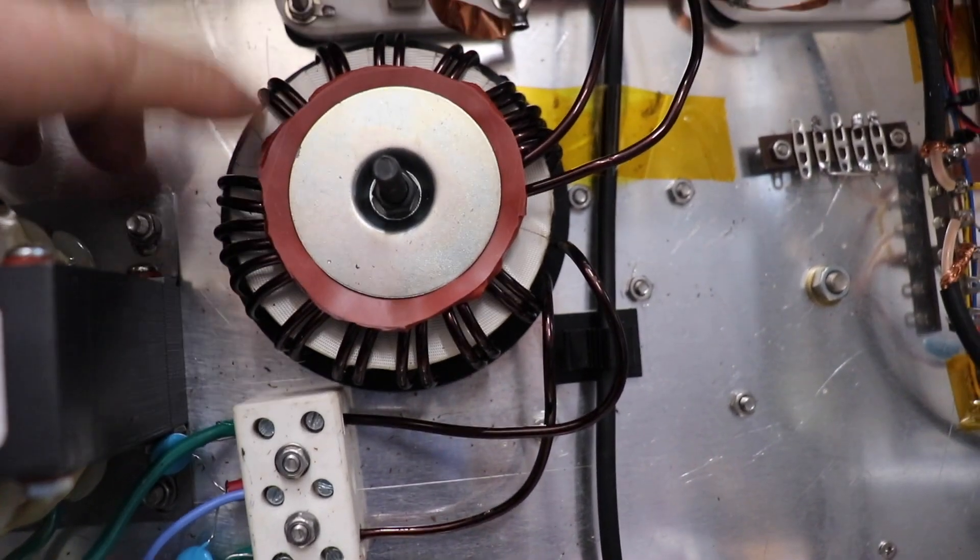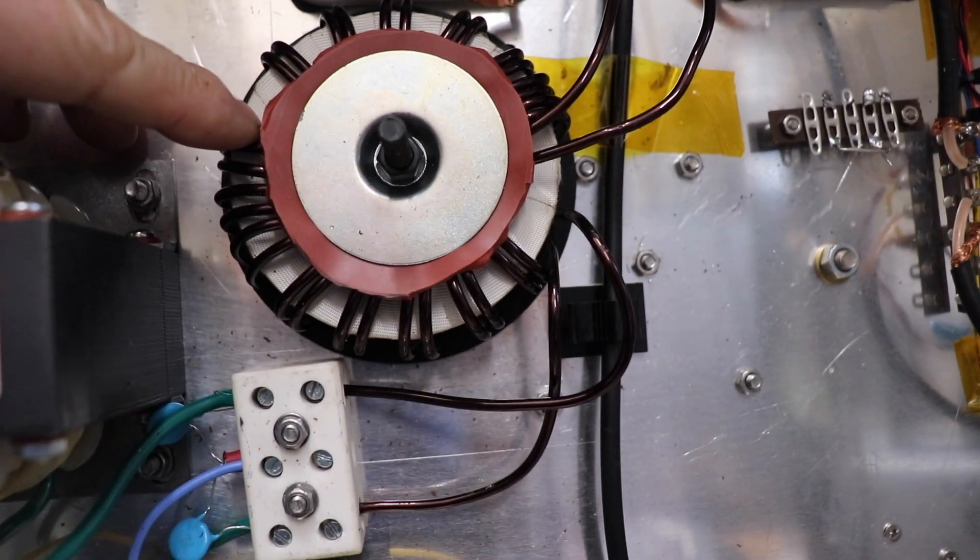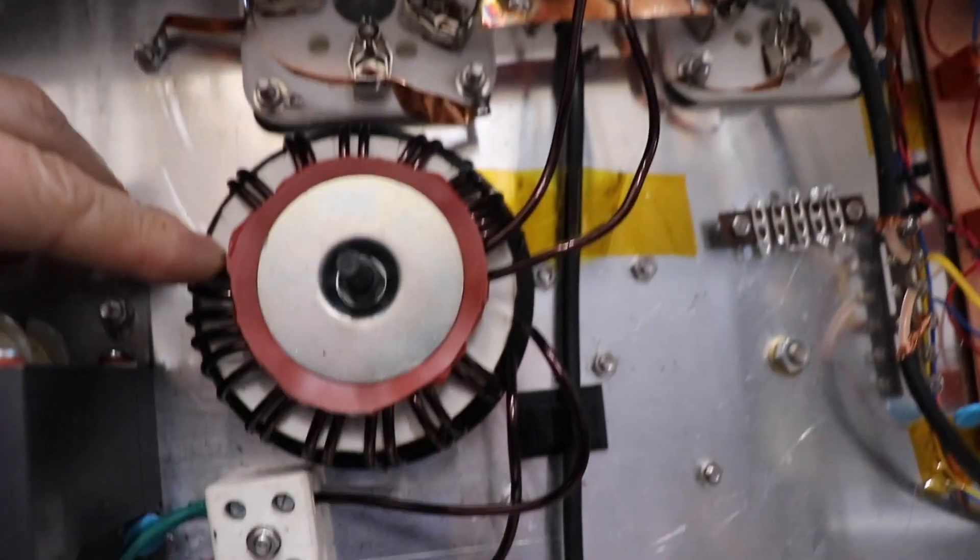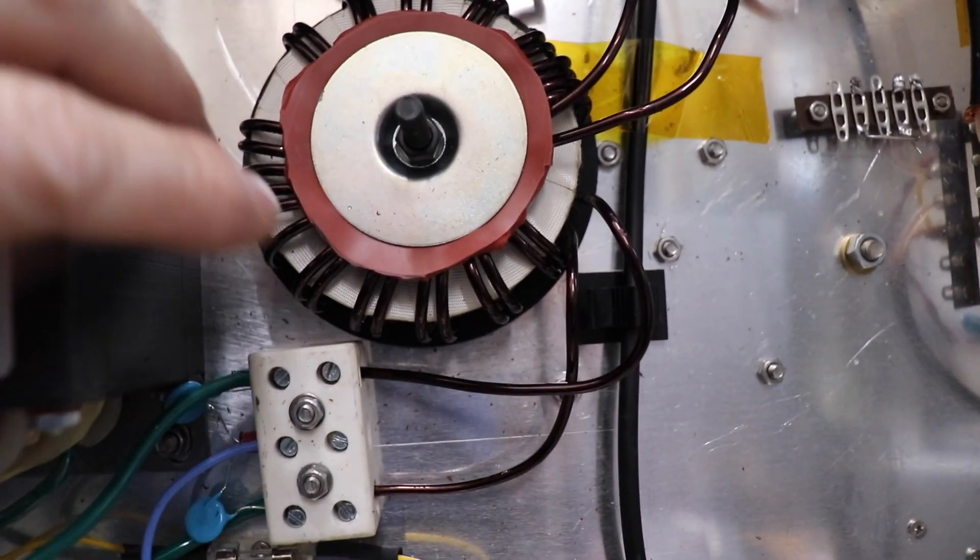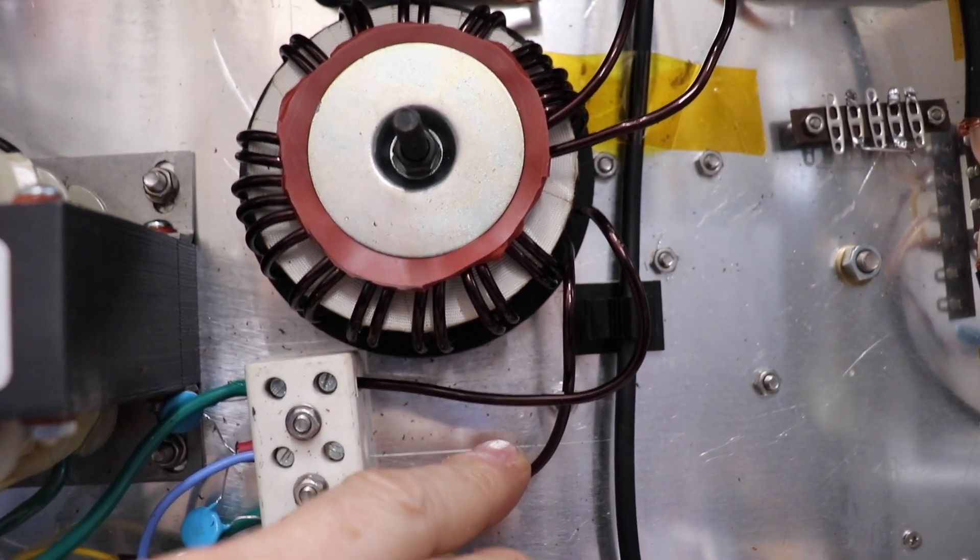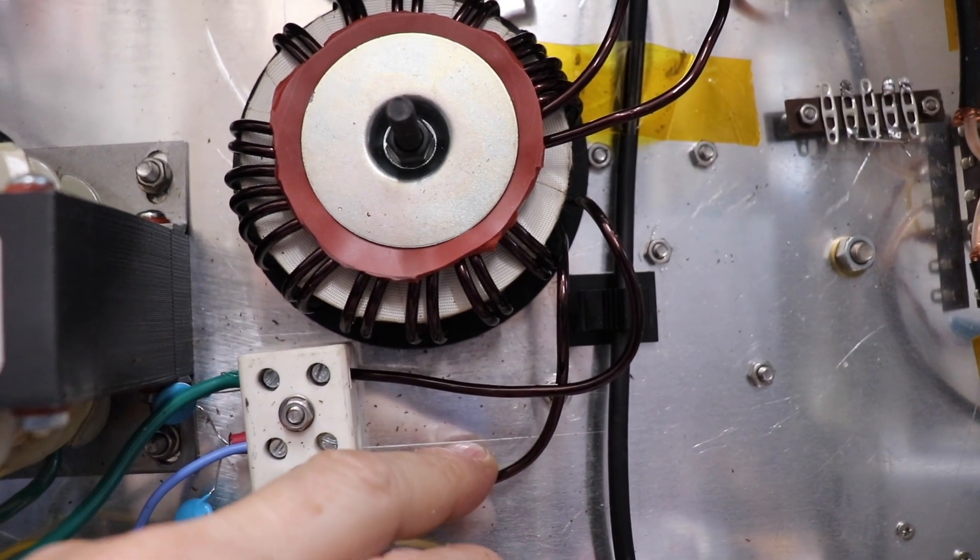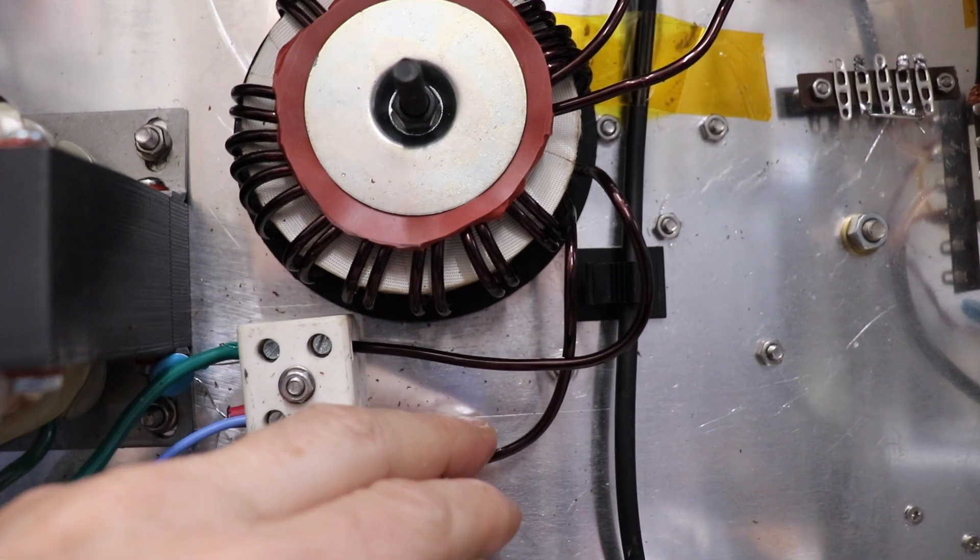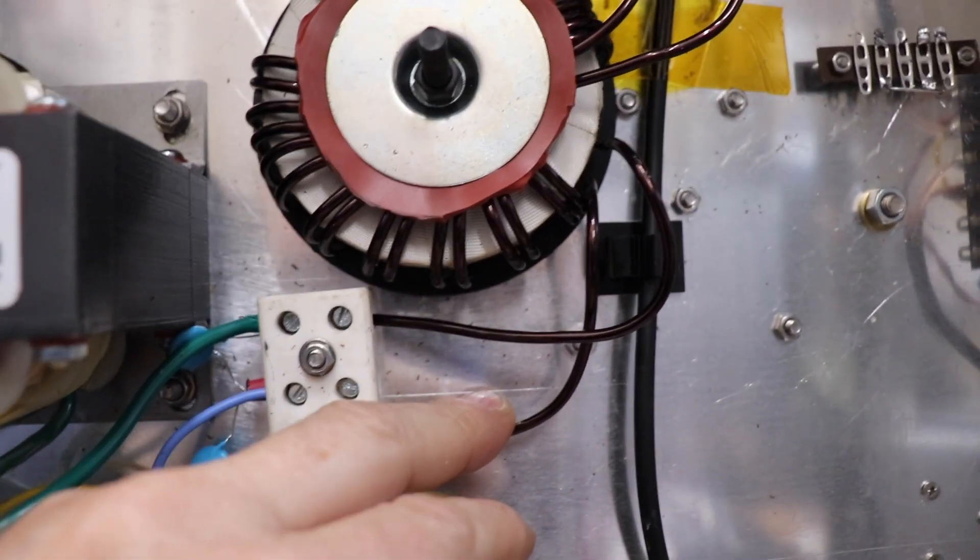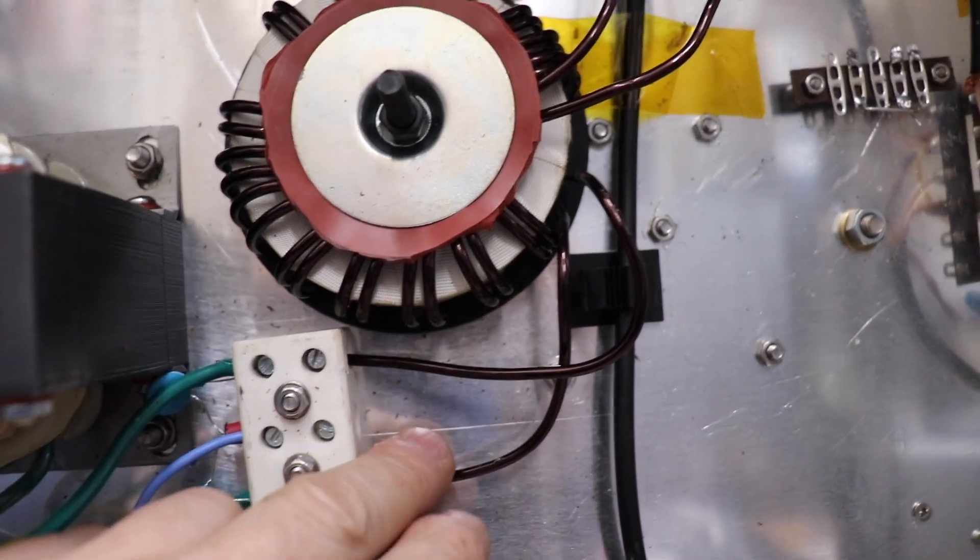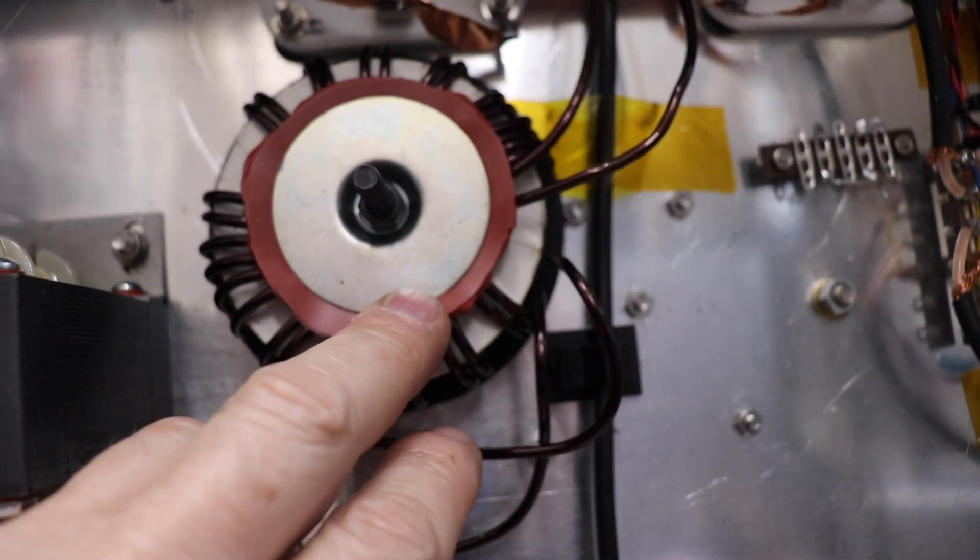It does work quite well actually. Got 20 microhenries on there, which is in the ballpark. But the other problem I had initially when I first fitted the filament choke, the wire that I was using which was pretty chunky, about two millimeter diameter wire, the filament choke was getting really hot. I mean 30 amps going through it. So I ended up having to redo that with much thicker wire.